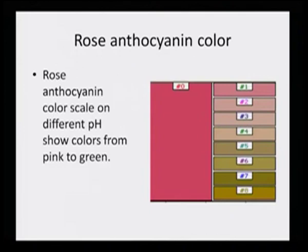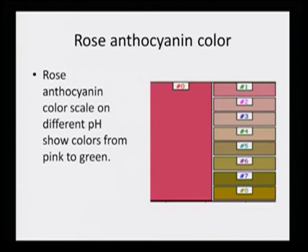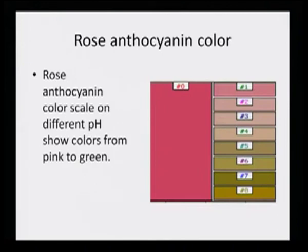This is the range of colors possible with rose anthocyanin at different pH values — from pink to green. On the color scale we made filter papers and took a scan to see the variation in pH. From pink at the lowest pH of 2, the color ranges through to completely green at pH 9, with various shades of green and pink as the pH alters.